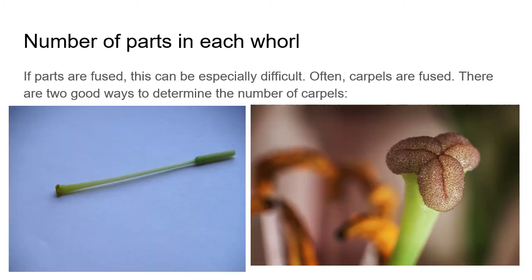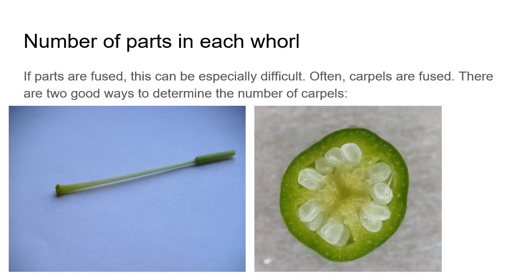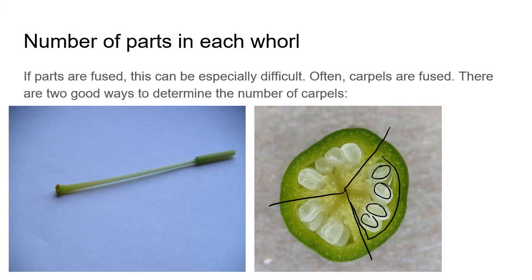Here's a lily carpel as an example. Looking at the stigma, we can see three main components. Slicing through the ovary below, we also see three main compartments. So we have three fused ovaries, and each contains ovules within compartments called locules.